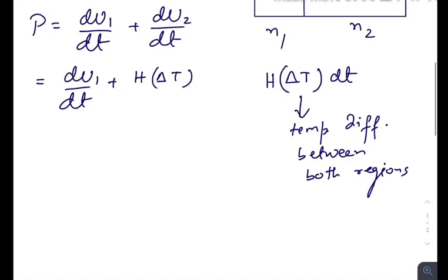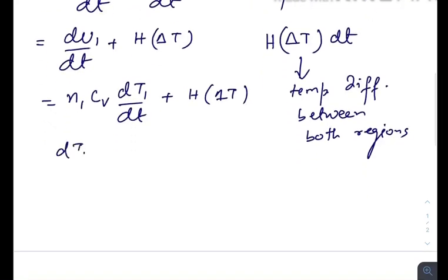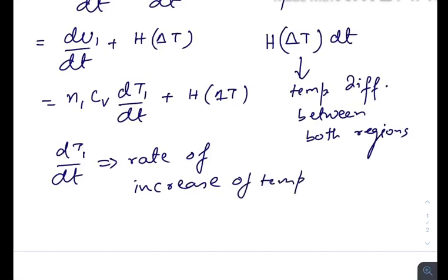So P = dU1/dt + H·ΔT, where dU1/dt is n1·Cv·dT1/dt plus H·ΔT. Here dT1/dt is the rate of increase of temperature in region one. Sorry for my worst handwriting but I hope you can understand.